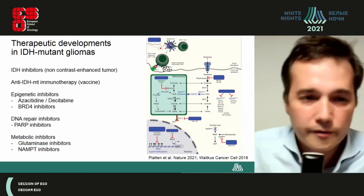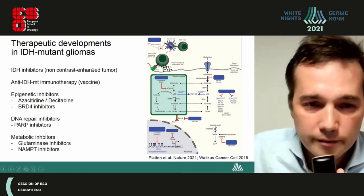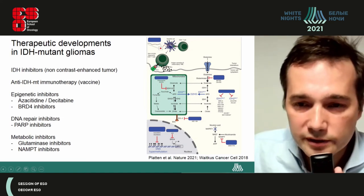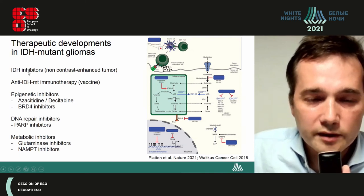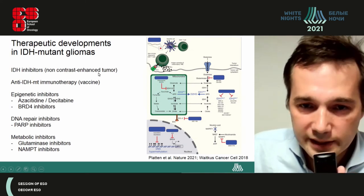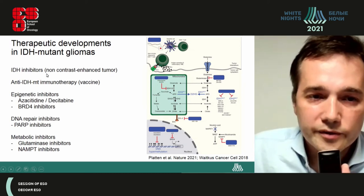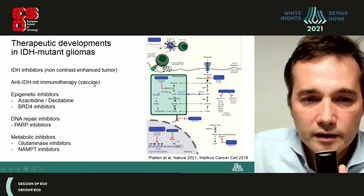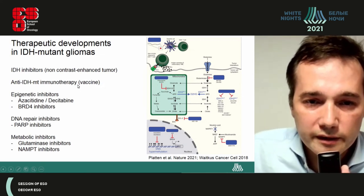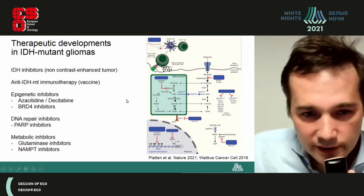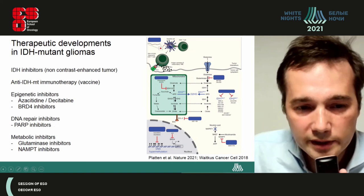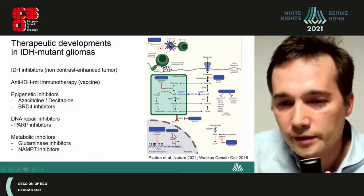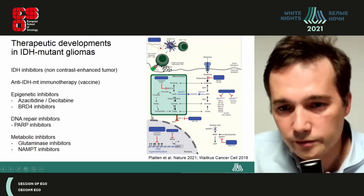This is the reason why we need new treatment strategies for patients who progress after standard treatment. These strategies are mostly based on what we know about the consequences of the IDH mutation: IDH inhibitors — which look particularly interesting in non-contrast enhanced tumours; anti-IDH immunotherapy with vaccines; and other strategies including epigenetic inhibitors, DNA repair inhibitors, and metabolic inhibitors. All these strategies need to be tested in clinical trials.